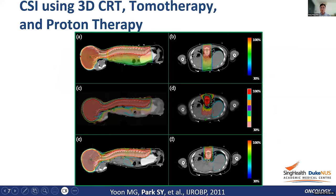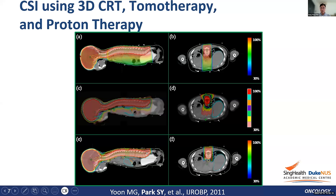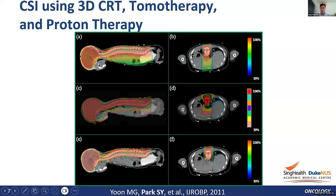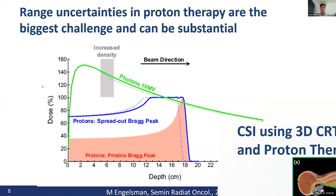Radiation therapy technology has developed from 2D to 3D conformal radiation therapy, then to IMRT, VMAT, image-guided radiation therapy, and particle therapy — each providing a steeper dose gradient. Now ART has been introduced as new technology, with an expectation of reduced normal tissue dose. A simple study comparing cranial spinal irradiation using 3D conformal RT, Tomotherapy, and proton therapy shows that proton therapy has no dose to healthy organs beyond the beam range.